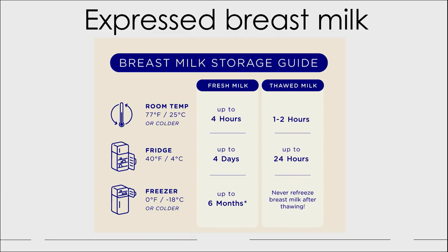Regarding expressed breast milk storage: fresh milk can be stored at room temperature for up to 4 hours; thawed milk for only 1 to 2 hours. In the fridge, fresh milk stores up to 4 days, thawed milk up to 24 hours. In the freezer, fresh milk stores up to 6 months, while thawed milk should not be refrozen.